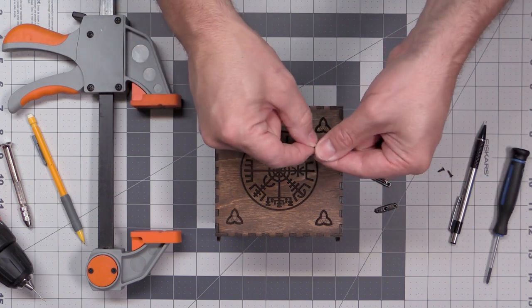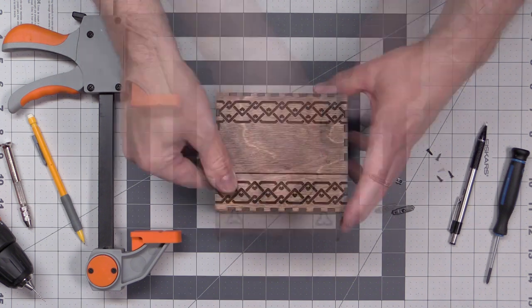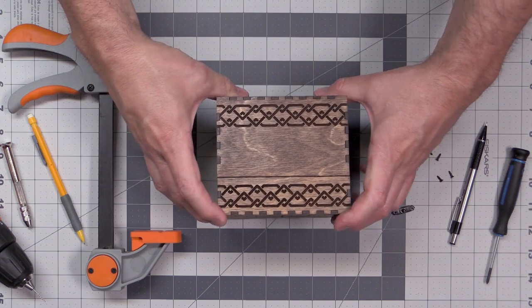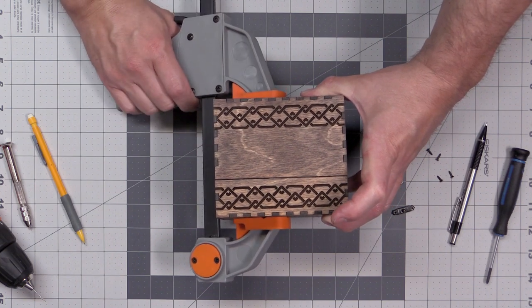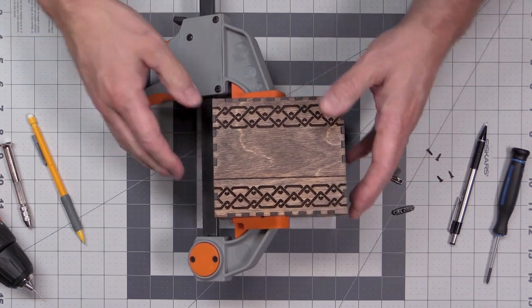This particular hasp I'll be using comes in two pieces and is installed using these little screws. When you're installing a hasp, the first thing you're going to want to do is clamp the two pieces of boxes together so nothing shifts on you in the installation process.